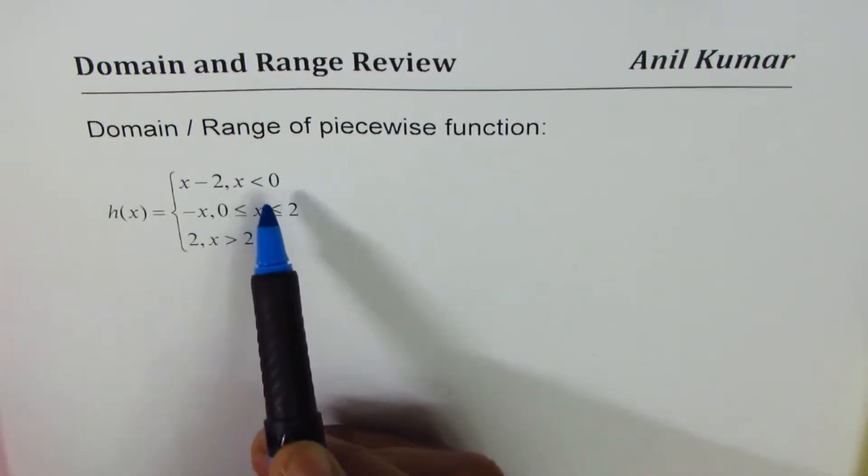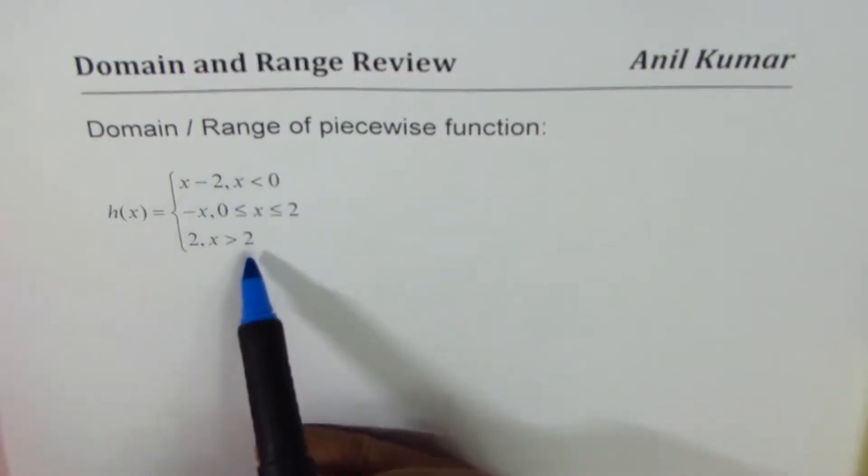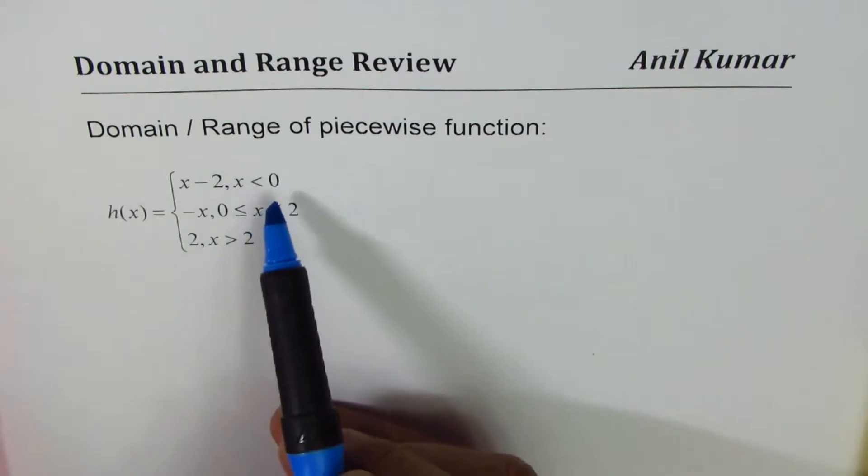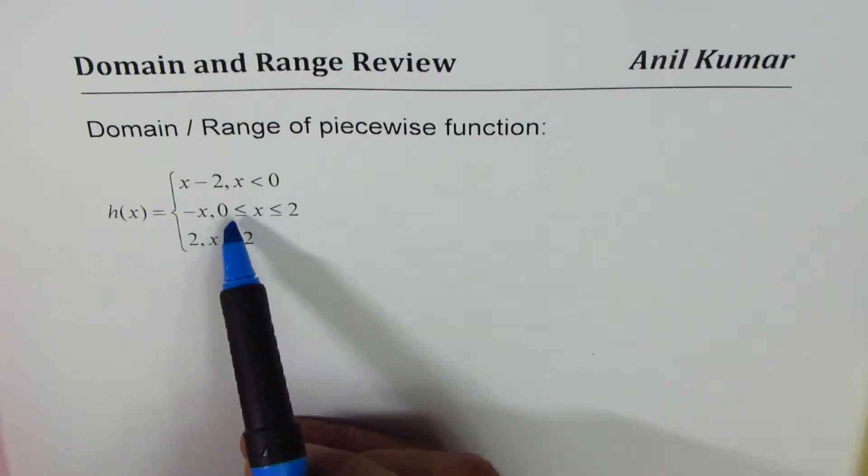From these three pieces you see the function is actually in the domain, it is continuous from minus infinity to plus infinity since we have less than 0, less than or equal to 0 to 2, and then greater than 2.